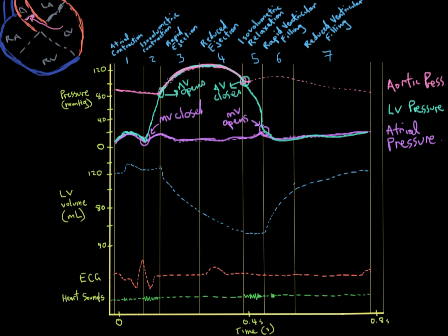As blood from the left ventricle ejects through the aorta, the aortic pressure rises in response, up to the top right here during rapid ejection. Then we hit the reduced ejection phase — we've already ejected most of our blood, so just a little is left, and pressure drops. The pressure drops so much that the aortic valve closes, after which pressure tapers off until the next cardiac cycle, where we do it all again.